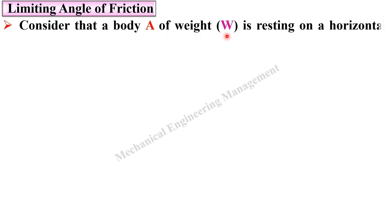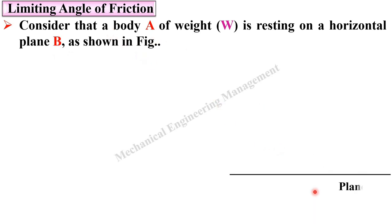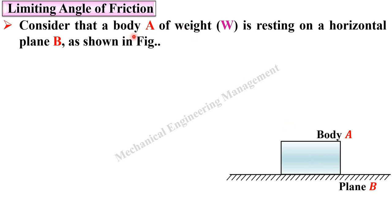Starting with the limiting angle of friction. Consider a body A of weight W resting on a horizontal plane B, as shown in the figure. This is the horizontal plane B on which body A rests. The weight W acts vertically downward from the center of gravity of the body. The normal reaction Rn is always perpendicular to the contacting surface and is exerted by plane B on body A.